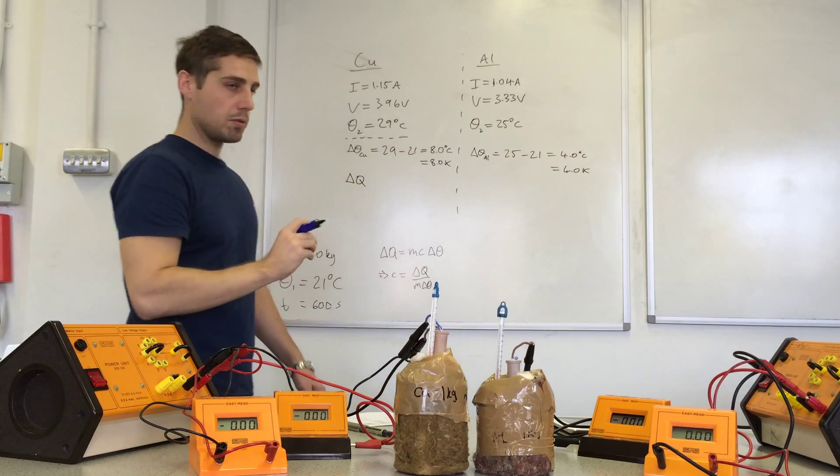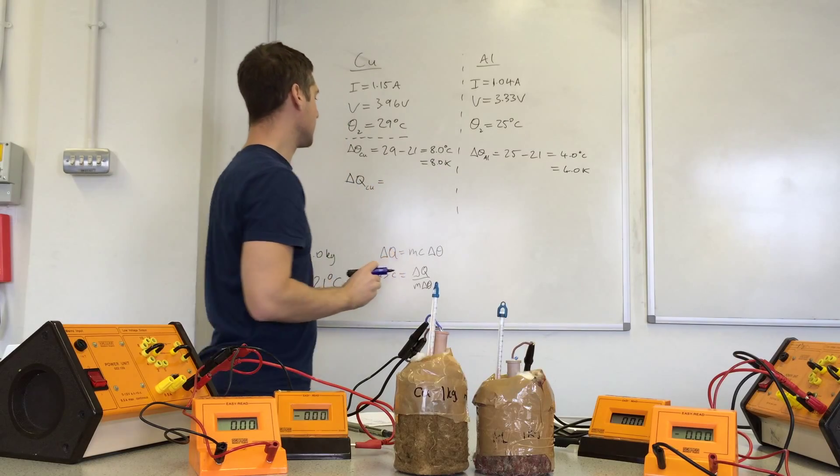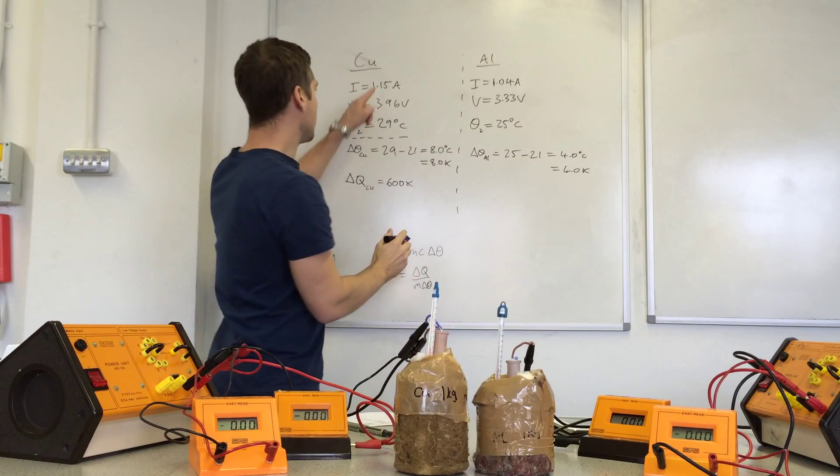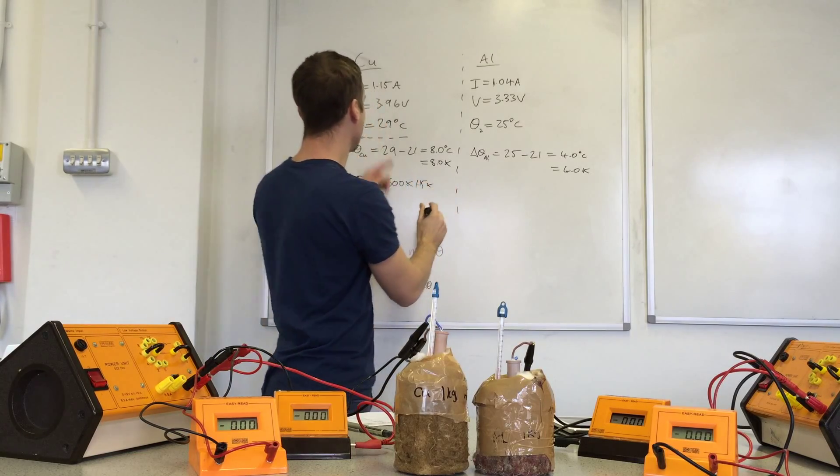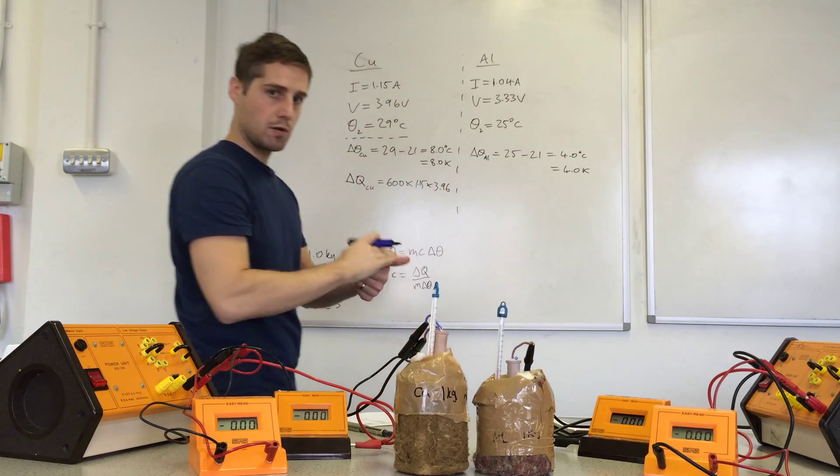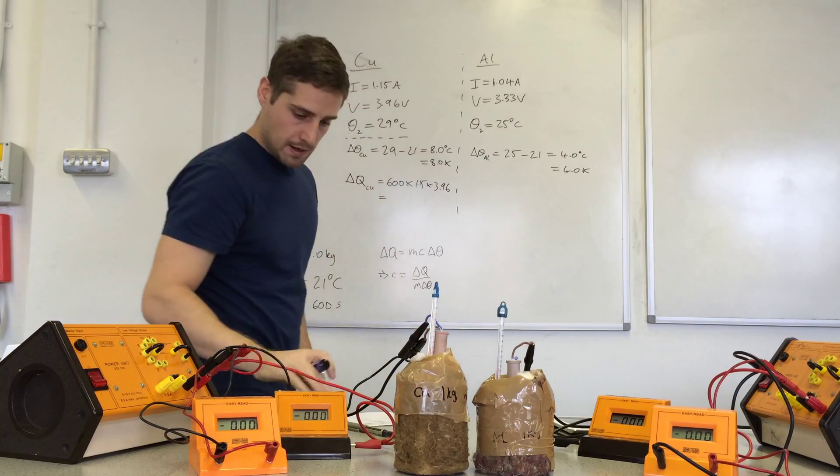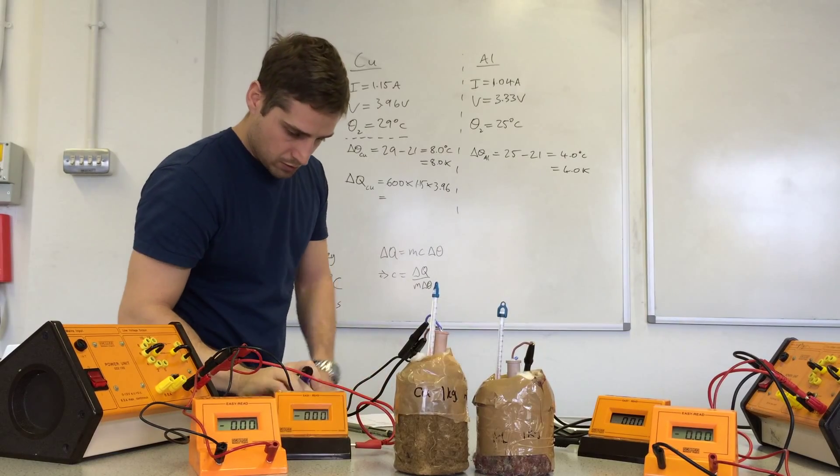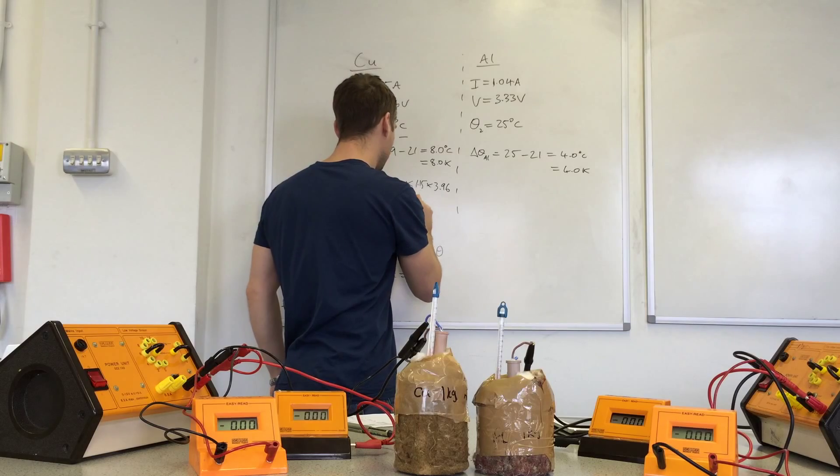The heat supplied for the copper block was 600 times 1.15 times 3.96. That's current times time times the voltage, and that comes out as 2730 joules.